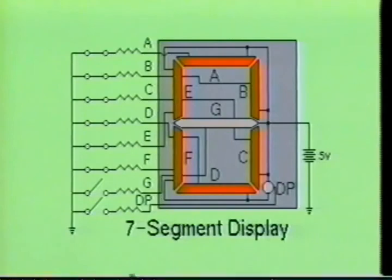We can also display the decimal zero by turning on segments A, B, C, D, E, and F.